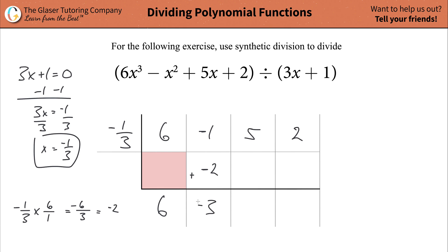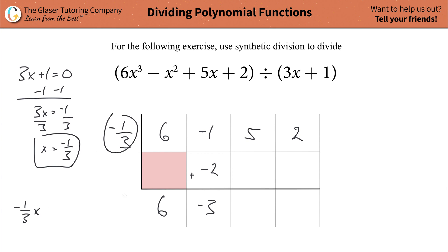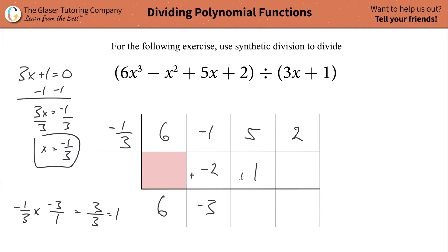Then you perform the procedure again: take this new value of negative three and multiply it by the term on the outside. So you have negative one third multiplied by negative three, which is the same as negative three over one. Negative one times negative three is positive three; three over three is one. That value of one gets plugged into the next adjacent cell. Add those terms together — that's a six.